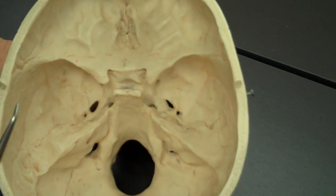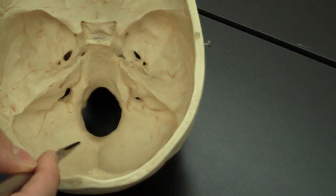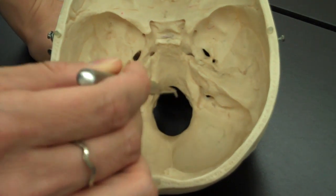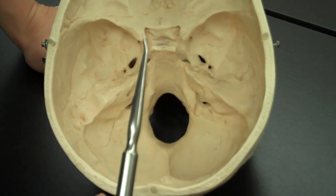A couple of things to point out: in the occipital bone you have this very large opening that's called the foramen magnum. That's the opening for the spinal cord to come up to the brain.